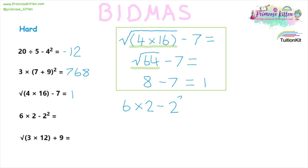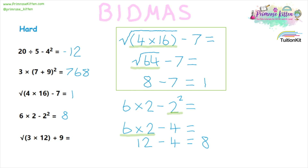Here we have six times two minus two squared. The index is the thing to do first. So the first thing we need to do is work out two squared. Two squared is four. This then simplifies to six times two minus four. The next thing we need to do is the multiplication — six times two. This gives us 12 minus four, and an overall answer of eight.